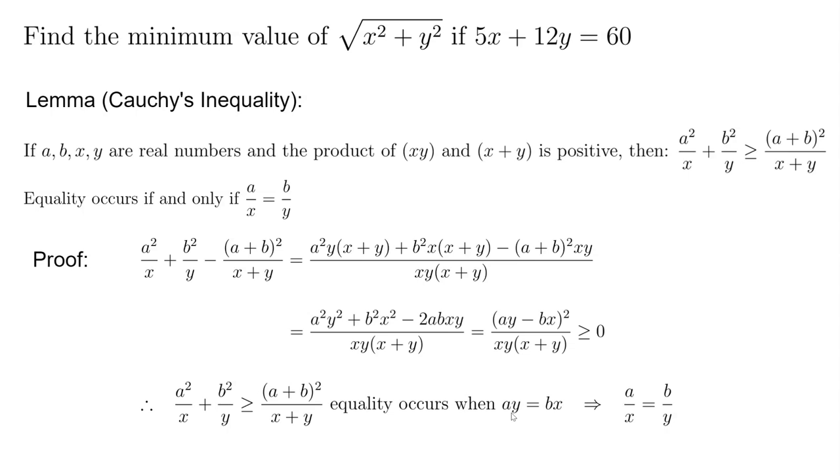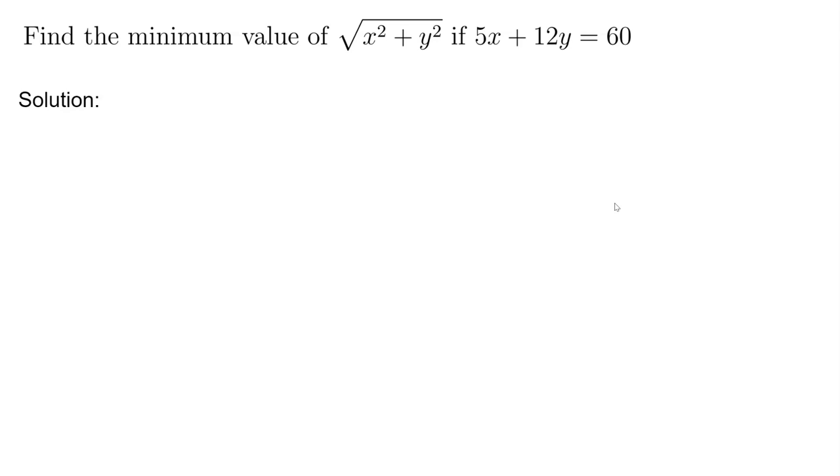Okay so we have this one once we have this equality it's very very straightforward to solve the original problem. So let's take a look because x² plus y² can be written as (5x)² over 25 plus (12y)² over 144. Okay then we use the inequality the Cauchy's inequality which is approved so this one is larger equal to (5x plus 12y)² over (25 plus 144).